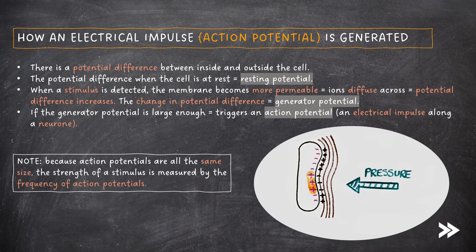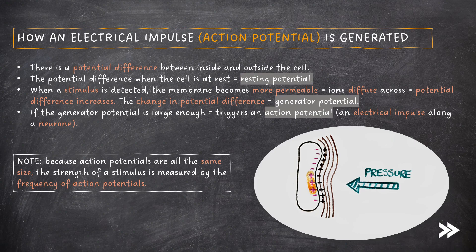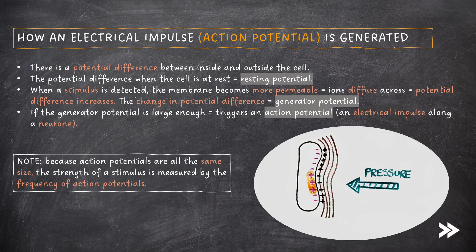Note that because action potentials are all the same size, the strength of a stimulus is measured by the frequency of action potentials. Note also that action potentials and how they are established will be covered in more detail in topic 3.6.2.1, which is all about nerve impulses, so do not worry too much if these new key terms and concepts are maybe a bit overwhelming at first.